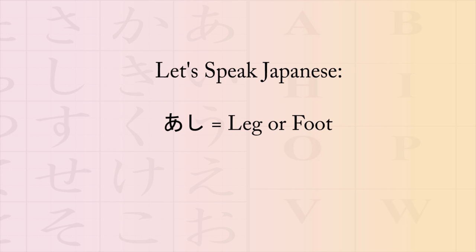The next word is ashi, which uses the letters a and shi, and means either leg or foot. For example, ashi ga itai can mean either my leg hurts or my foot hurts, where itai means hurt. Once again: ashi ga itai, which means my leg hurts or my foot hurts. The word is ashi, or faster: ashi.